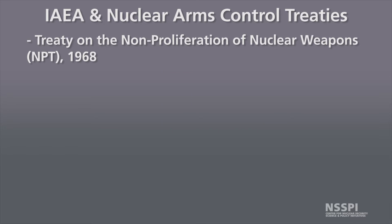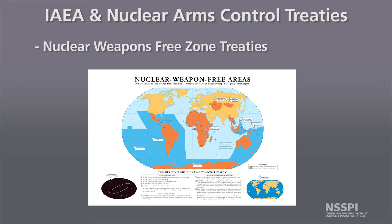In addition to the NPT, there are several nuclear weapons free zone treaties. The basic idea of these is that a region of specific states decides that they don't want nuclear weapons in any of those regional states or anywhere in their region — whether from one of the regional states or from some state outside of the region covered by the treaty. There are five of those treaties.